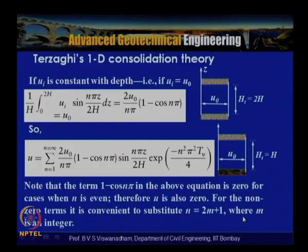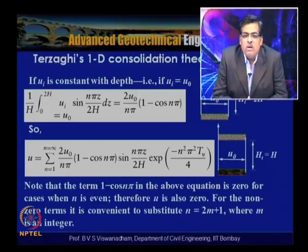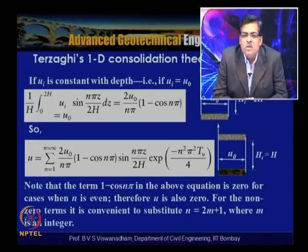Note that the term (1 − cos nπ) equals zero when n is even (n = 2, 4, 6, …), so those terms vanish. For the non-zero terms it is convenient to substitute n = 2m + 1, where m is an integer: m = 0, 1, 2, 3, …